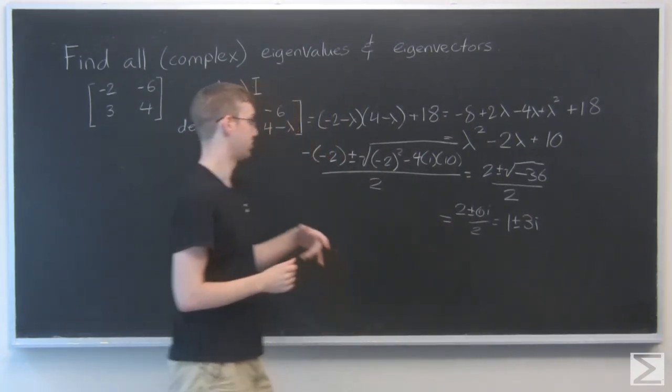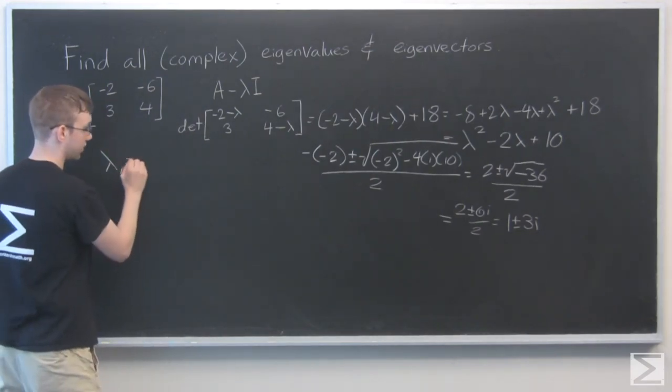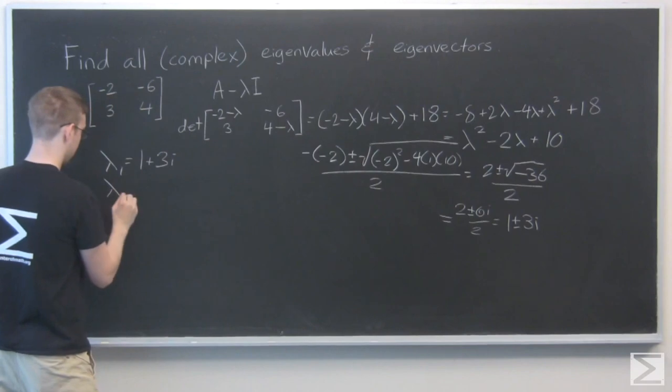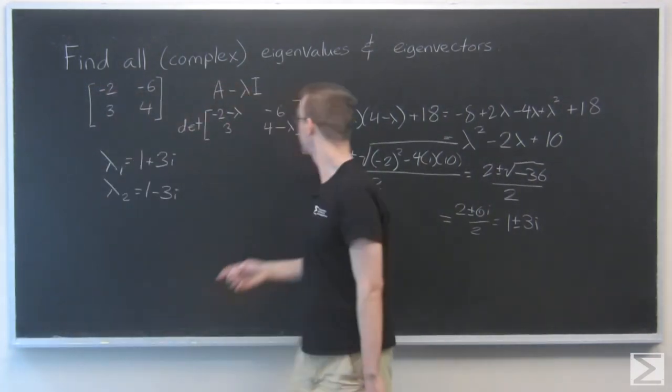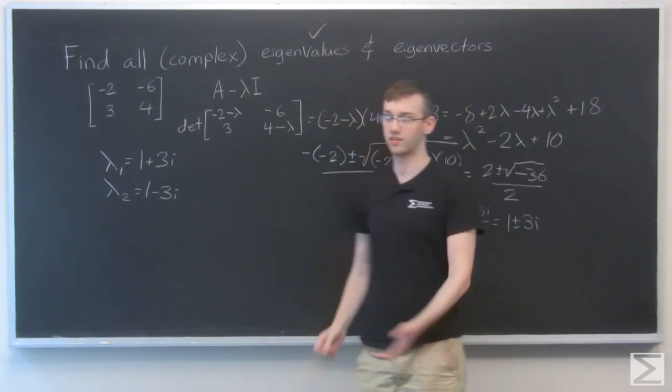OK, so because those are the roots, we can take that. We're going to say lambda 1 equals 1 plus 3i, lambda 2 equals 1 minus 3i. So those are our eigenvalues. Now we just need to find the eigenvectors.